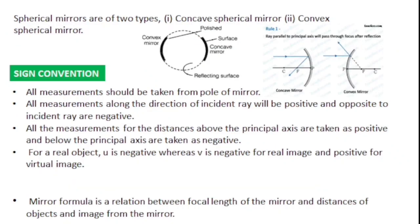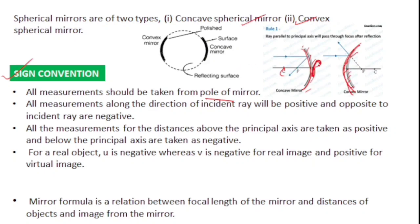There are different types of reflecting surfaces — plane mirror and spherical mirrors. Spherical mirrors are of two types: concave mirror and convex mirror. There are sign conventions for image formation by mirrors. All measurements should be taken from the pole of the mirror. A concave mirror is polished from the inner surface and a convex mirror from the outer surface.